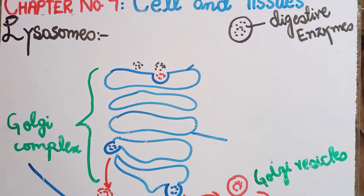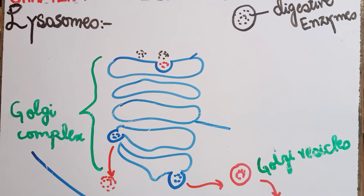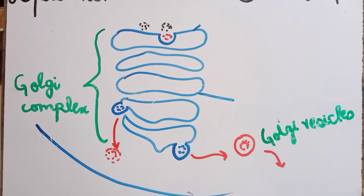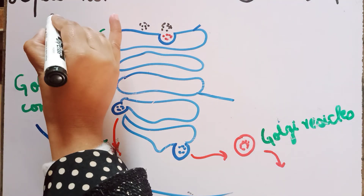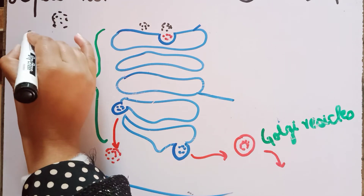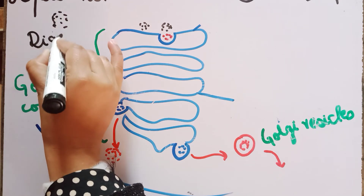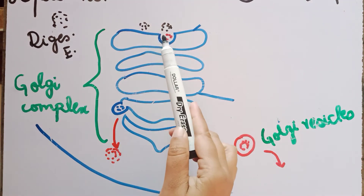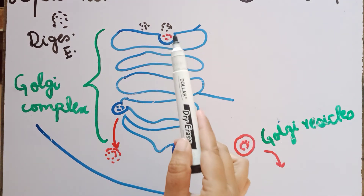Now let's see how these are constituted. Last time we saw the Golgi apparatus properly. The Golgi apparatus and endoplasmic reticulum modify molecules. If we have digestive enzymes, they are processed through and modified by the Golgi apparatus.